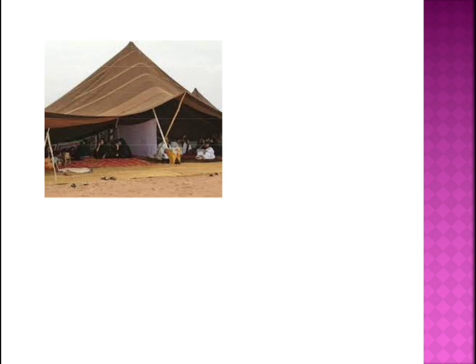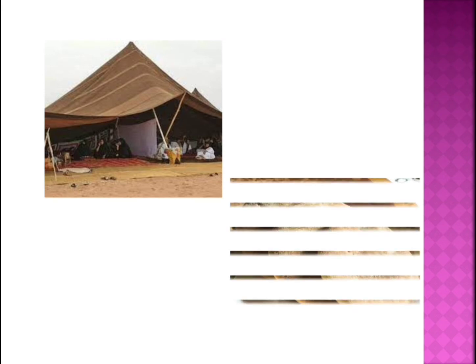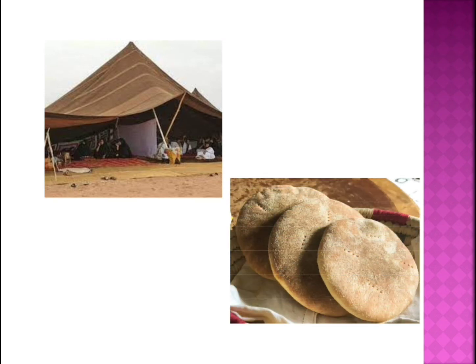Nowadays they prefer caravans, but before it was animals — that is, camels. The food they eat is meat, and also a dry bread called cubs and dates. These dates come from palm trees which grow in the desert region. In this way, they move from one place to another in search of food and water.